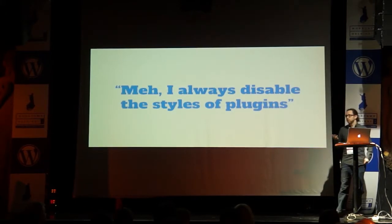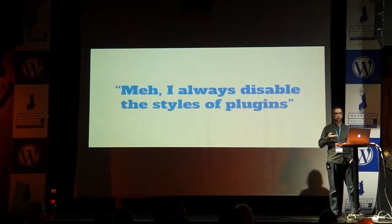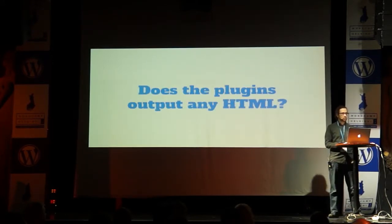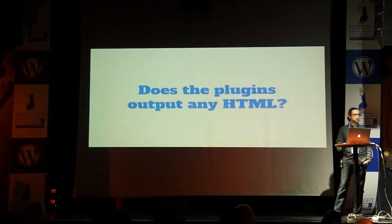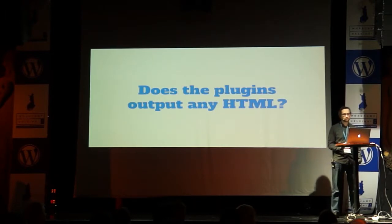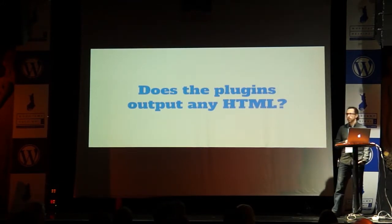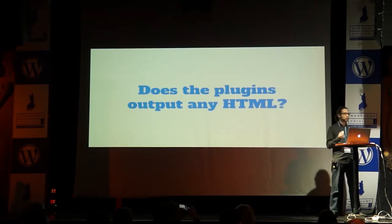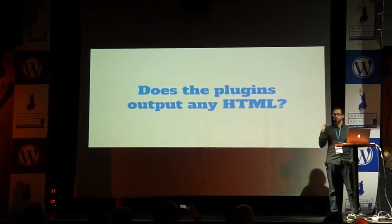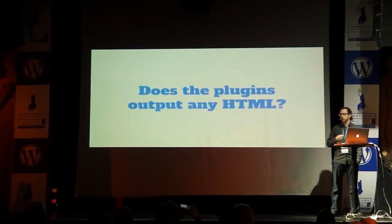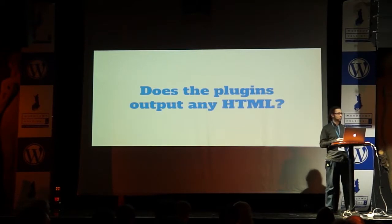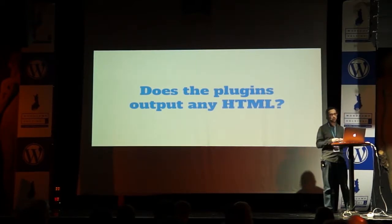You might say that you always disable the styles of the plugins you use and write your own custom styles, so this doesn't bother you much. But do any of the plugins you use output any HTML to your site, like title tags or something like that? Are you sure those tags will remain the same after every update? You can't be sure, so you end up doing visual regression testing manually — clicking randomly through links, viewing all layouts, and trying to spot style errors. That means a lot of work and it's also quite error prone. So why not do it automatically and save some time and effort?